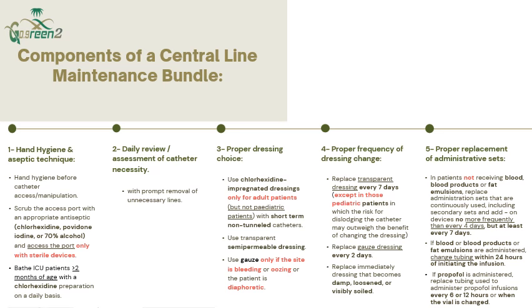The fourth component is proper frequency of dressing change. The transparent dressing should be replaced every seven days if it is clean with no signs or symptoms of infection. If there is bleeding, oozing, or signs and symptoms of infection, replace both the dressing and the catheter itself. Gauze dressing, as mentioned, is used only when there is bleeding or oozing and should be replaced every two days or when soiled.